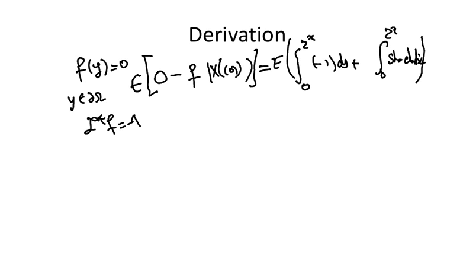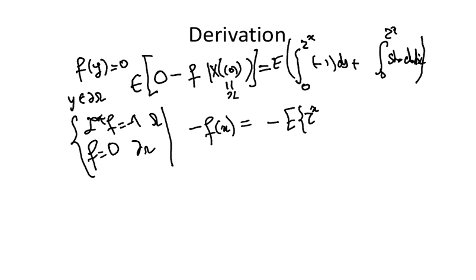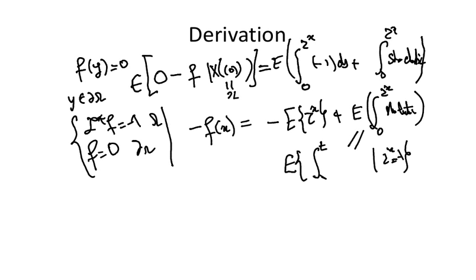By definition, f is a deterministic function, a solution of this equation. This equals minus f of x equals integration from 0 to tau of x of minus 1, which is precisely minus the expectation of tau of x plus the expectation with respect to the Brownian motion of the stochastic part.